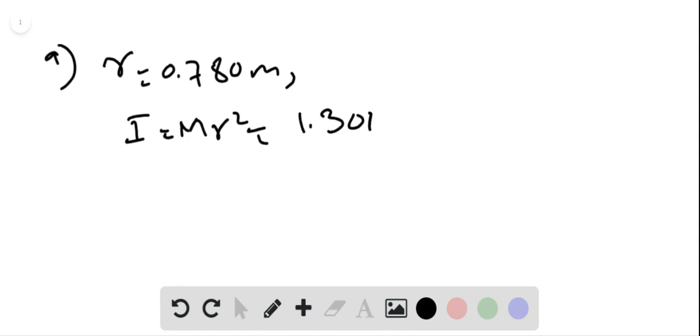Where M is 1.30 kg times the R, which is 0.780 square. This gives us 0.791 kg meter square.